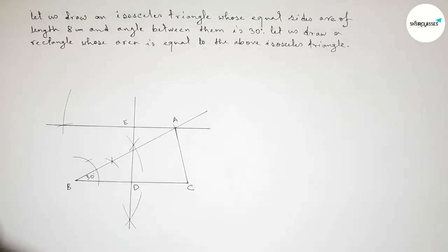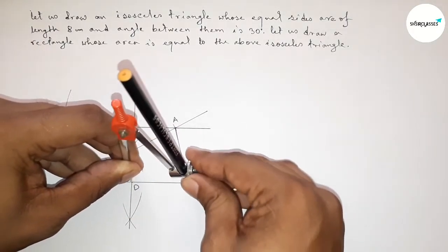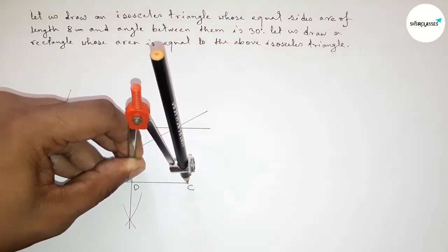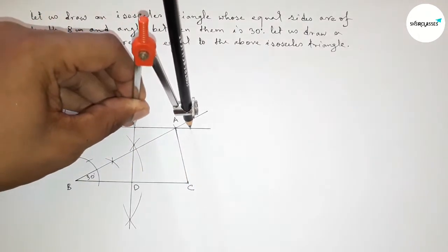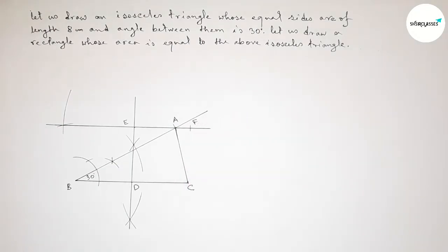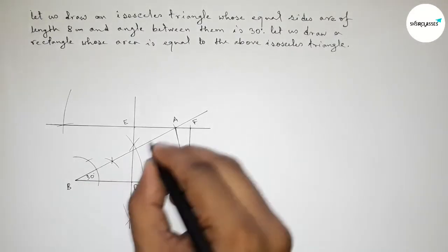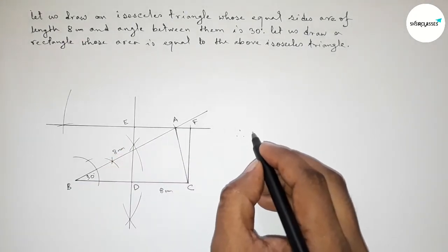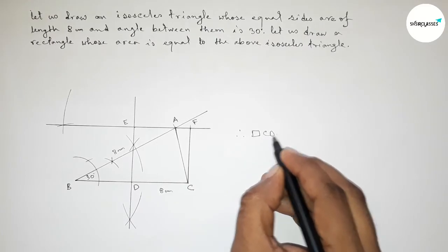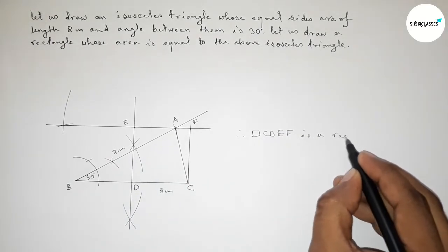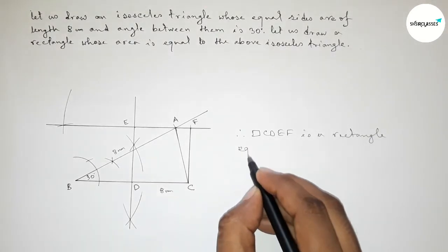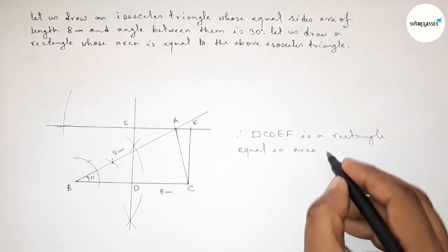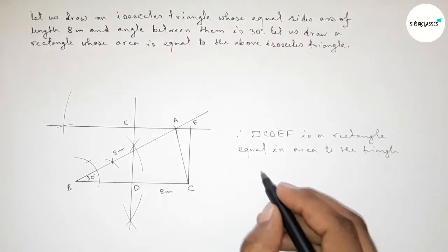Now taking the length DC by using compass and putting the compass on point E, cutting here. Taking point F here. Joining C and F. This line is 8 centimeters and this is 8 centimeters. Therefore CDEF is a rectangle and equal in area to the area of triangle ABC.